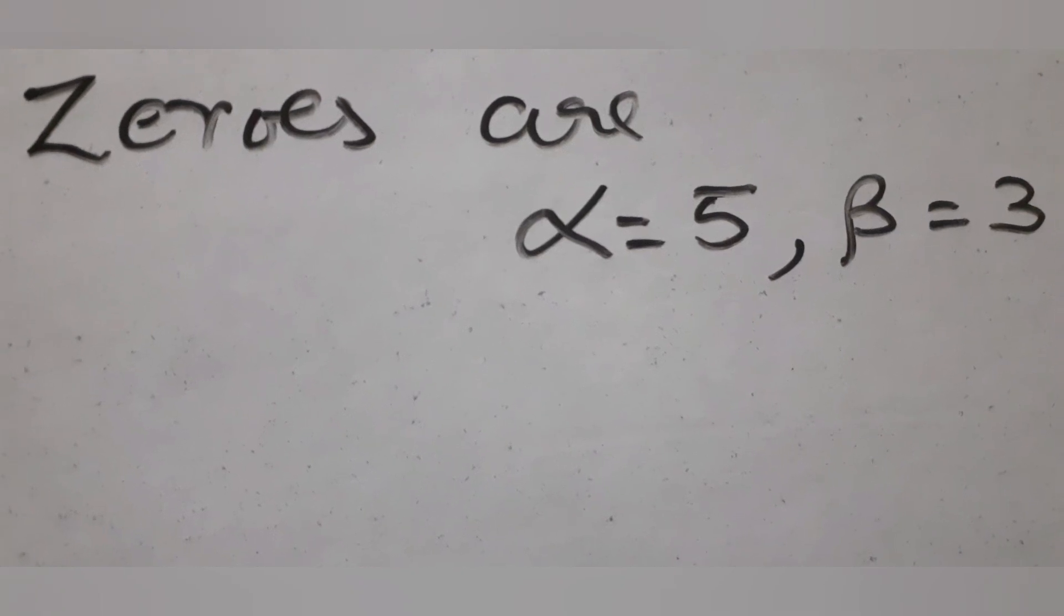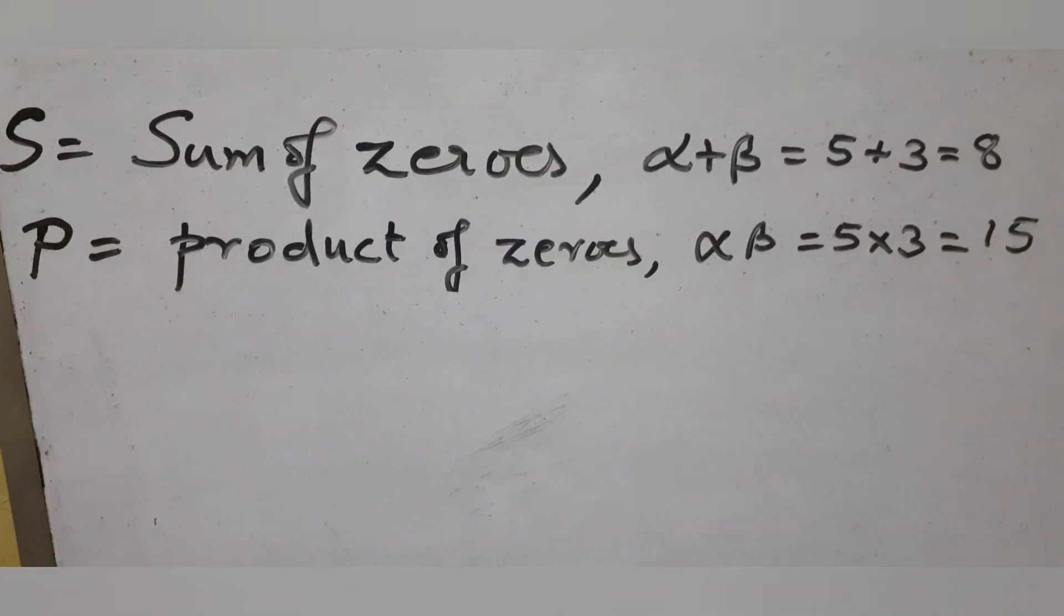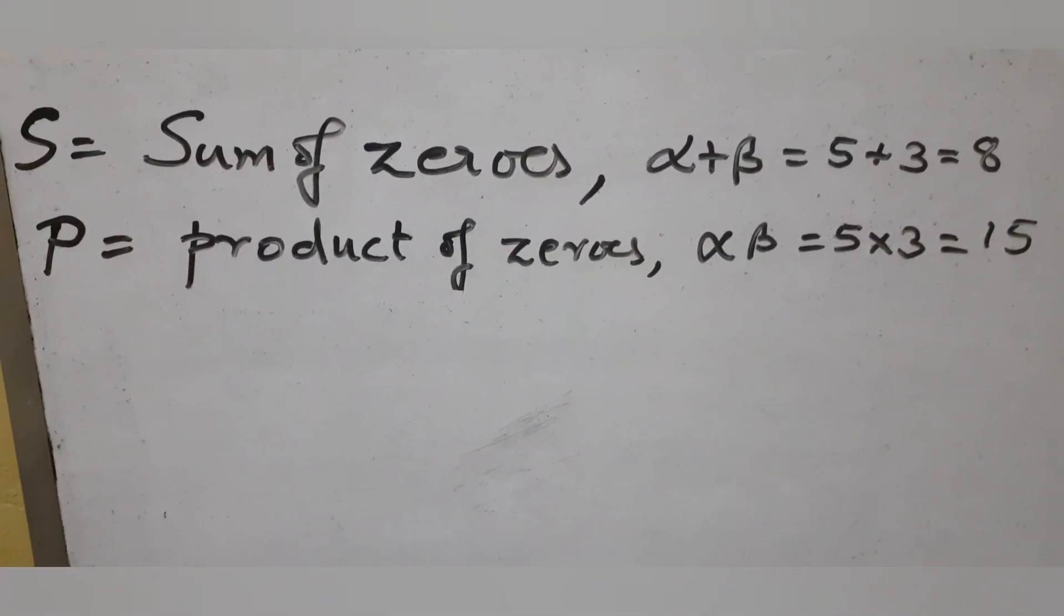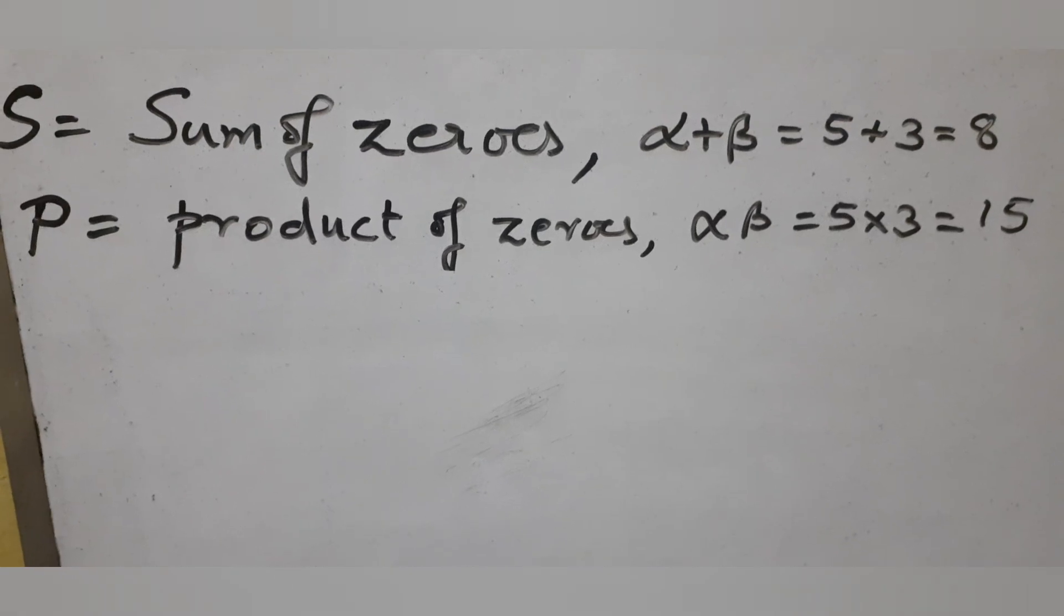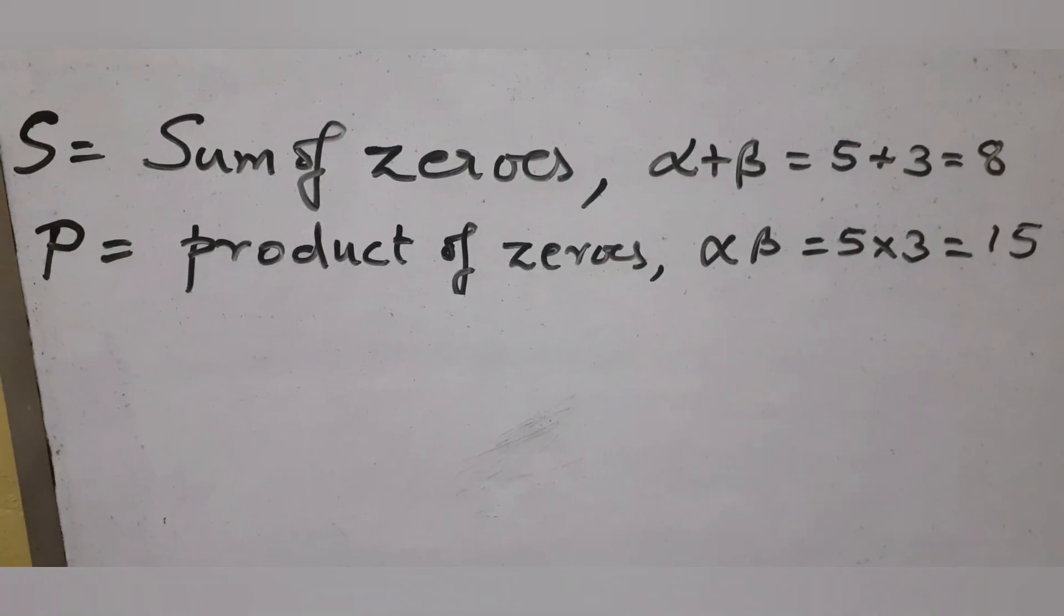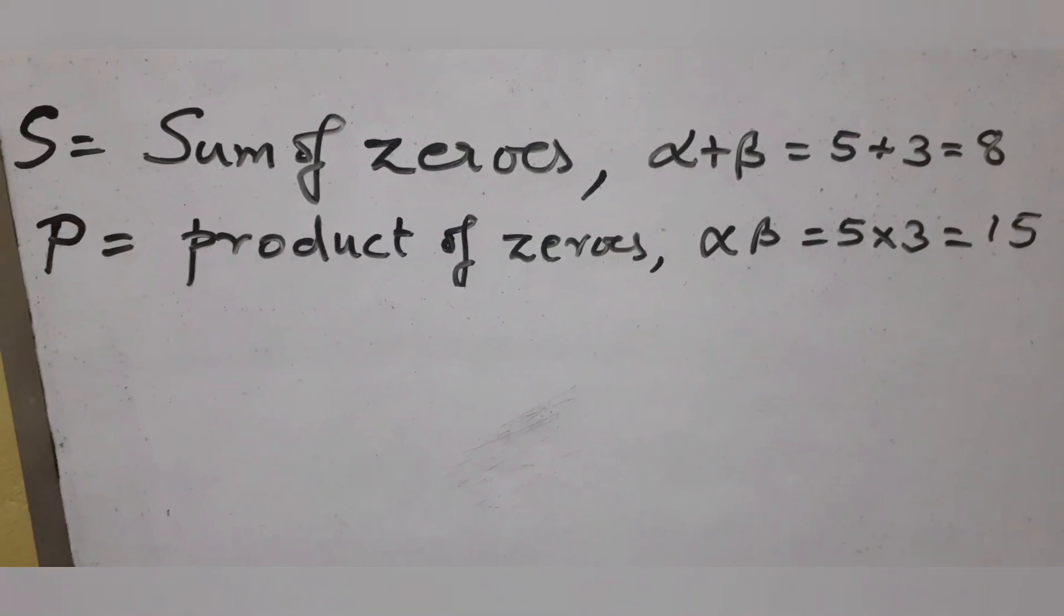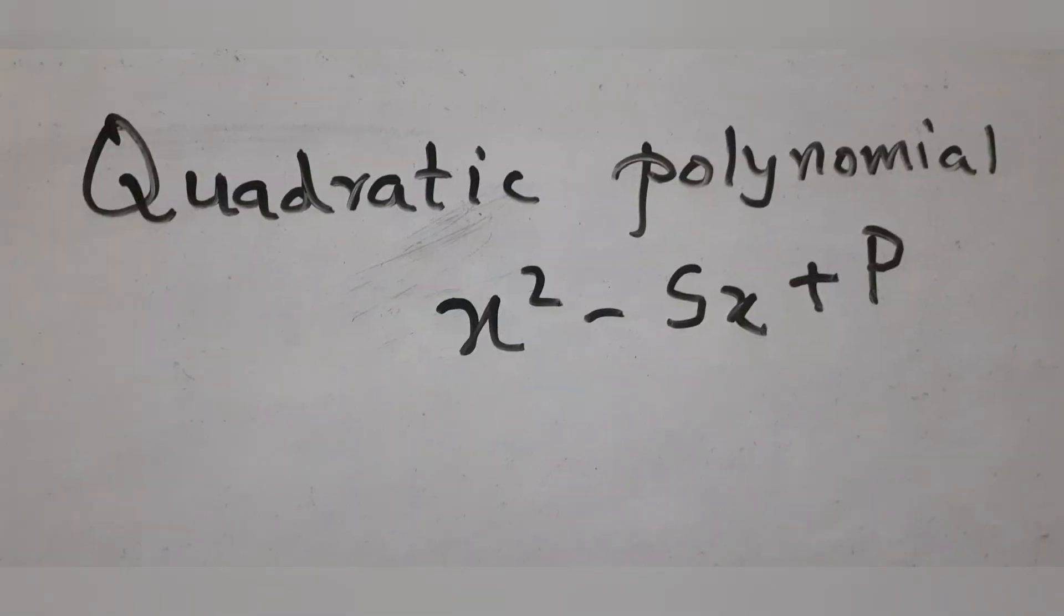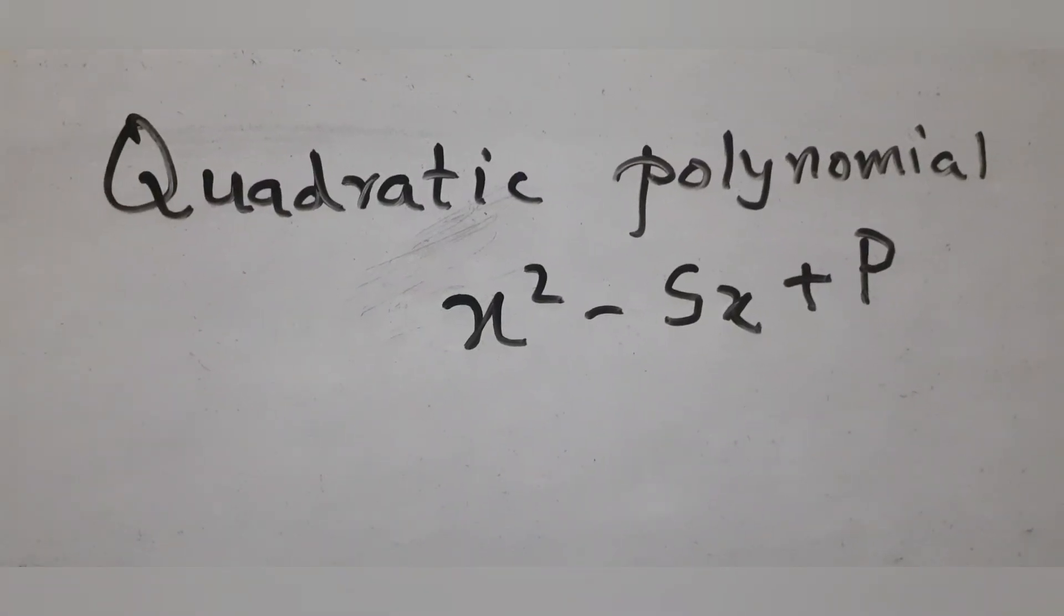To find the quadratic polynomial, we find S, the sum of the zeros, and P, the product of the zeros. Here S is alpha plus beta, which is 5 plus 3 equal to 8. It is also given. The product is alpha times beta equal to 5 times 3 equal to 15. Now we substitute everything into the standard form.